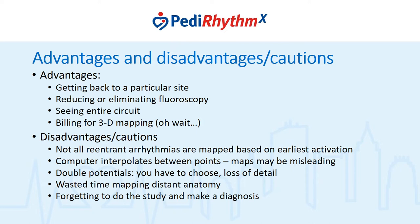Double potentials often create a problem because electroanatomic mapping systems require you to choose the timing at a particular location. By definition, if you're dealing with a double potential — meaning conduction around a fixed line of block — you have two ways of activation: one going up one side of the line of block and coming down the other. You have to choose, and CARDO doesn't do well with that. It's also easy to waste time mapping parts of the heart that have nothing to do with the basic diagnosis. And just mapping doesn't mean you've made a diagnosis — you have to do maneuvers to make a firm diagnosis before you proceed.